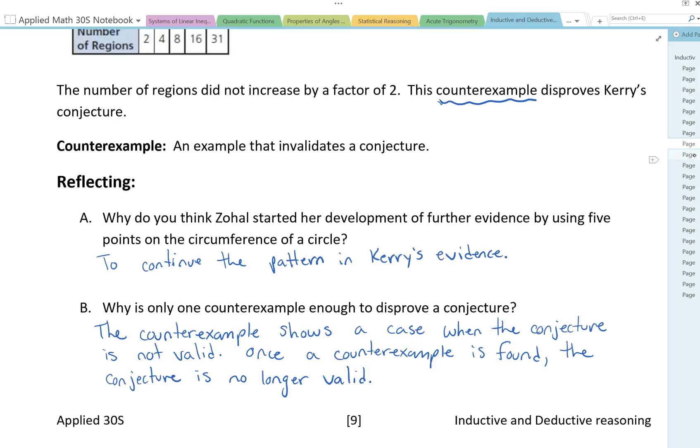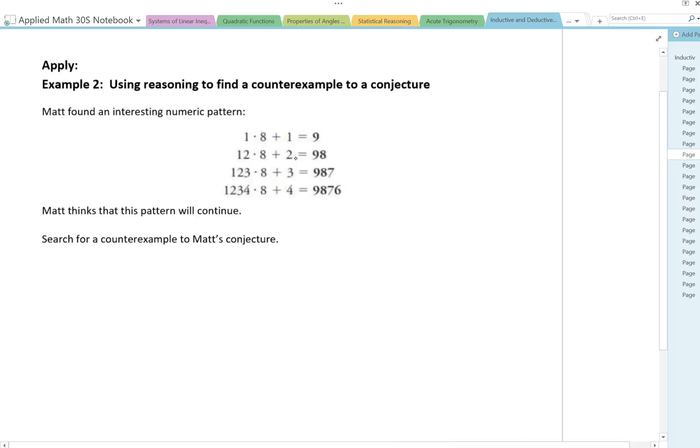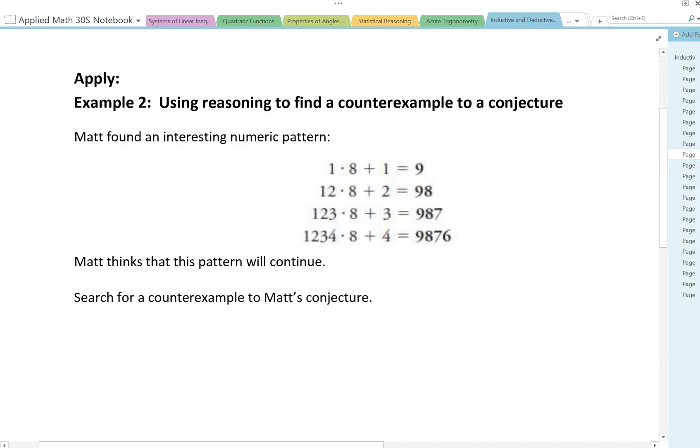Let's try another example. Example 2: Using reasoning to find a counterexample to a conjecture. Matt found an interesting numeric pattern. Matt thinks that this pattern will continue. Search for a counterexample to Matt's conjecture. So let's see. He had 1 times 8 plus 1 is equal to 9. Then he had 12 times 8. Then 123. So 1, 2, 3. Then 1, 2, 3, 4. And he was getting a pattern on the other side.